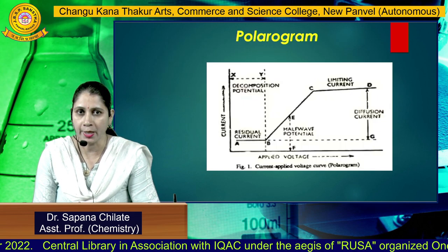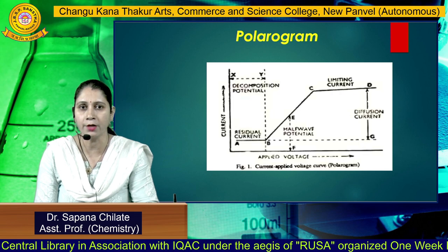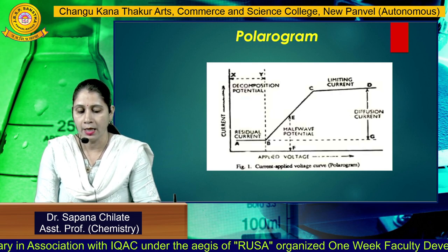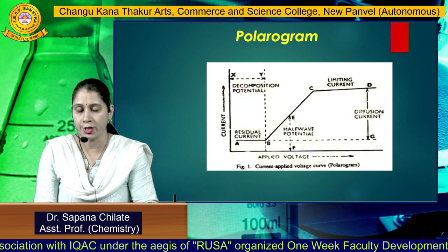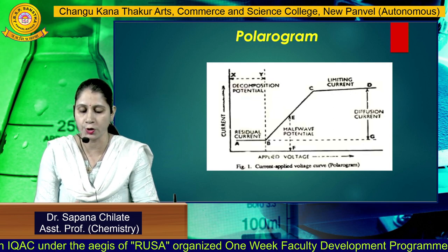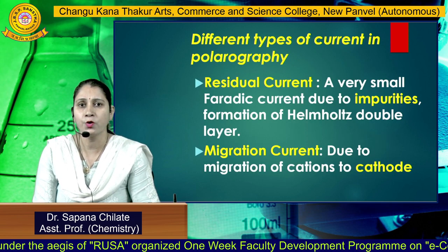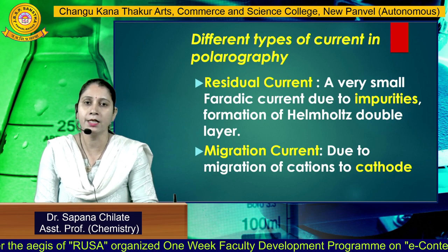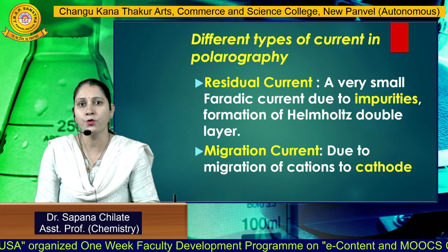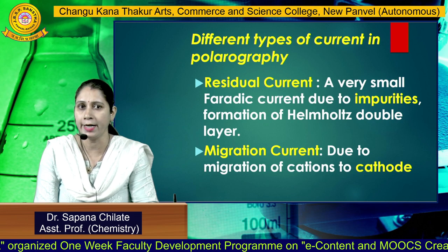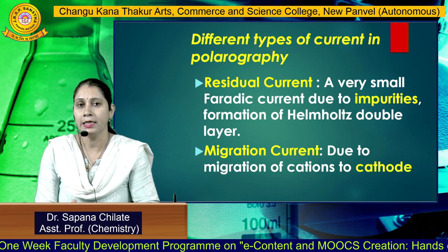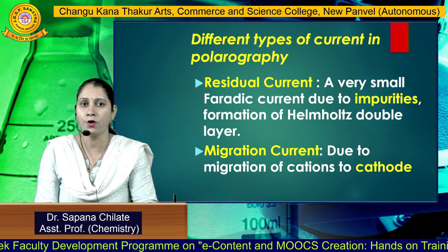This is the typical polarogram. Here we can see the different regions: residual current, then limiting current and diffusion current. There is also a chance of small migration current. Now let's study the different regions in the polarogram. The residual current is due to a very small faradaic current or due to impurities present in the cell, which is also due to the Helmholtz double layer.